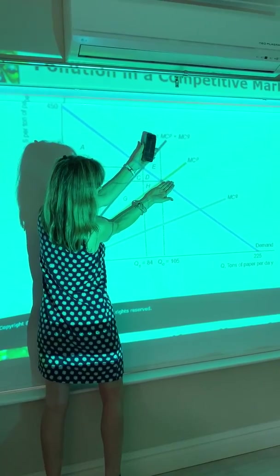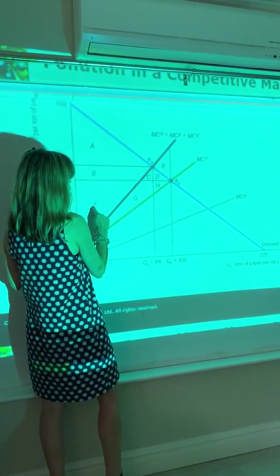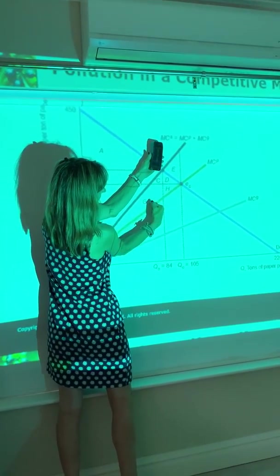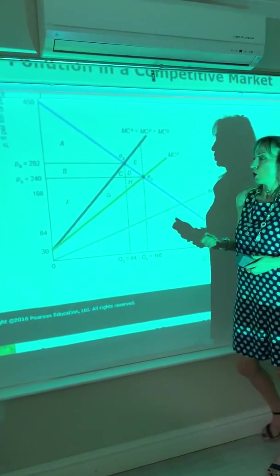So if we take this amount and subtract that from our initial producer surplus of F, G, H, we'll get your true social producer surplus.